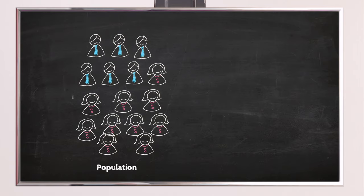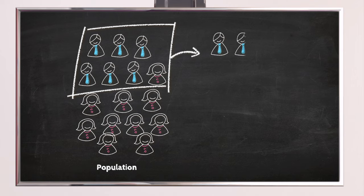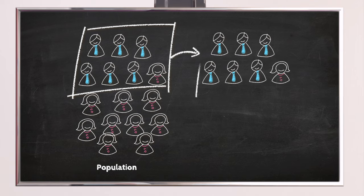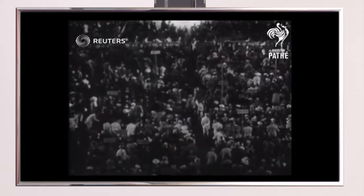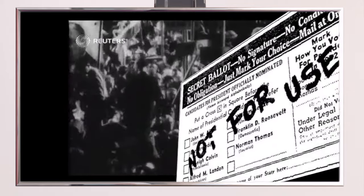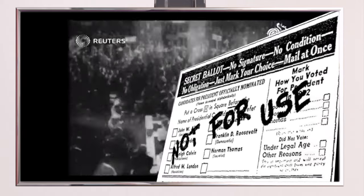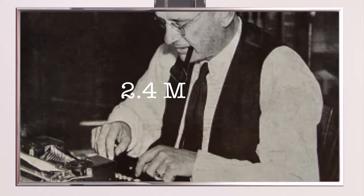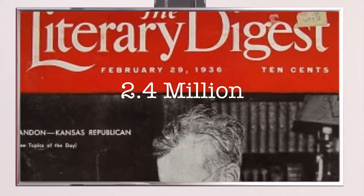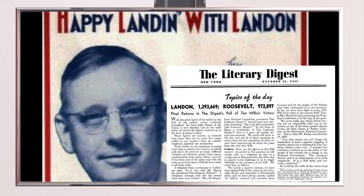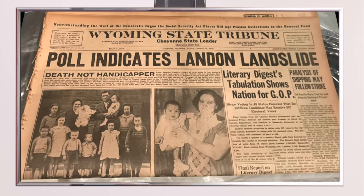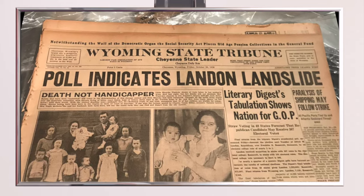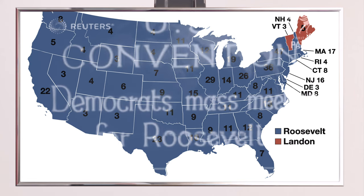Let me give you one more for the road: the coverage bias, when you inadequately represent some members of your population. A famous example can be found in history. In 1936, before the US presidential elections, the Literary Digest conducted a survey of 10 million people and received 2.4 million answers, obtaining a very clear winner: Alfred Landon, the Republican governor of Kansas. However, the actual winner was Franklin Delano Roosevelt, with 62% of the votes.